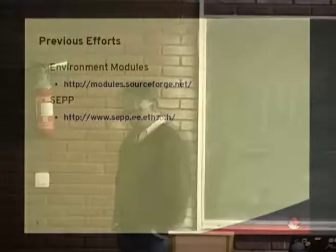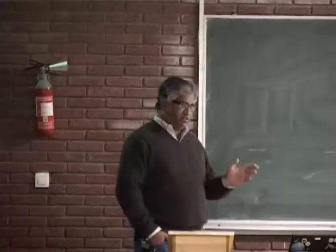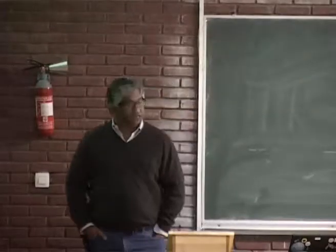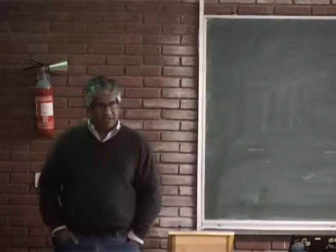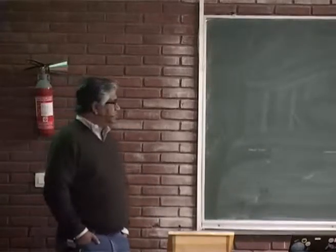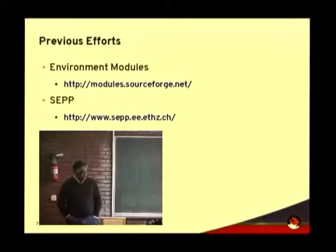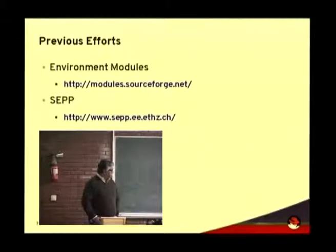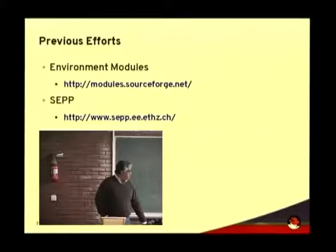Just a slight history — the problem of managing multiple versions of applications goes back to when Unix was in its early days. Two early solutions are Environment Modules, built with TCL sometime in the mid-90s and still in use in some locations, and another effort called Simple Packaging done by Tobias Utiker around 1998. There have been ongoing efforts around how to manage different versions of applications and provide utilities to address this.